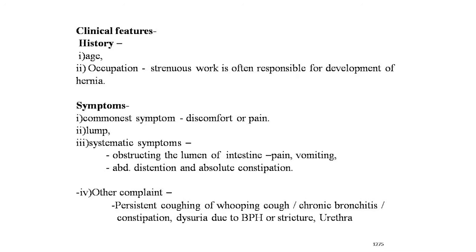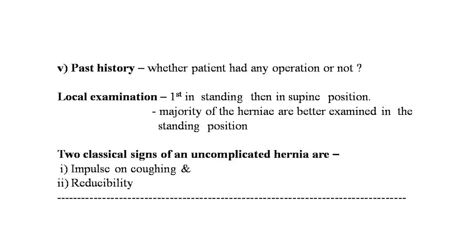Clinical features: history — age is most important in both hernias; occupation — strenuous work is often responsible for development of hernia. Common symptoms include discomfort or pain. Obstructive symptoms include pain, vomiting, abdominal distension, and absolute constipation. Other complaints like persistent coughing, whooping cough, chronic bronchitis, constipation due to BPH — benign prostatic hypertrophy — or urethral stricture. Past history should be taken whether the patient had any prior operation, for incisional hernia. Local examination first in standing then supine position. Two classical signs of an uncomplicated hernia are impulse on coughing and reducibility.